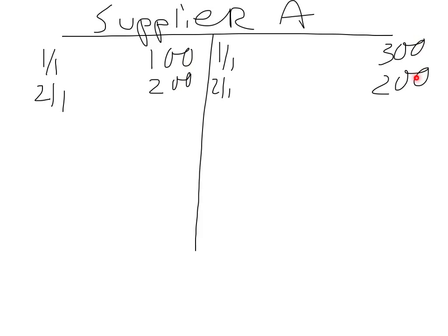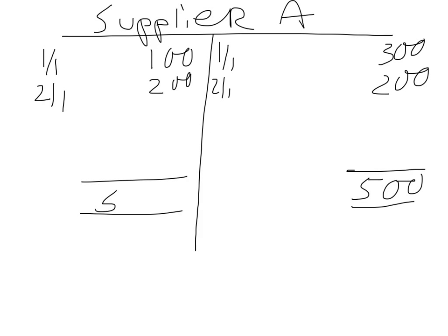So 500 — put it on this side and you also put it on the opposite side. Next, on the credit side we now got 300 plus 200 is equal to 500. But on the debit side we got 100 plus 200 is equal to 500, which is absolutely not correct.